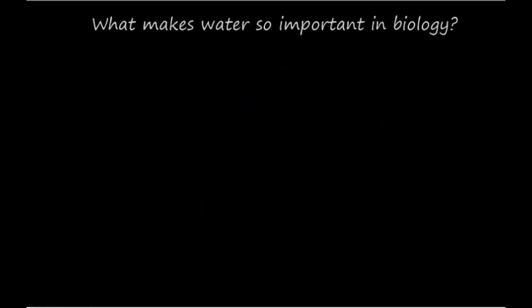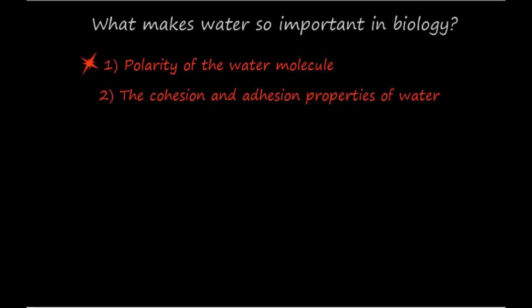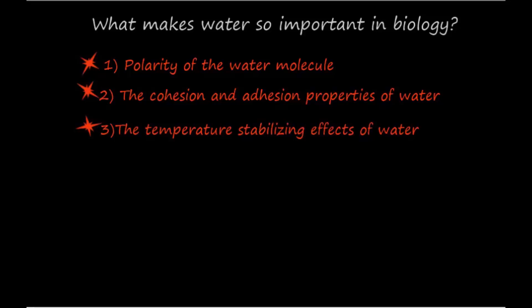Having addressed the question of why water is important in biology, let's turn our attention to what properties water possesses that makes it so different from any other liquid. I'll list the important biological properties, then review each of them in brief detail. These properties include polarity of the water molecule, the cohesion and adhesion properties of water, the temperature stabilizing effects of water, and water as the universal solvent.